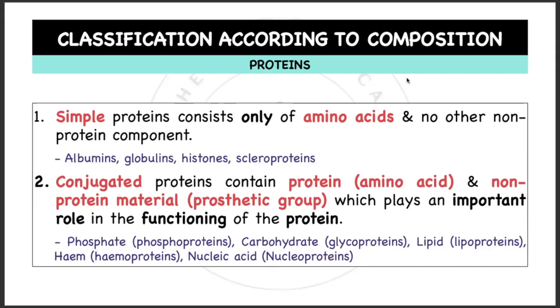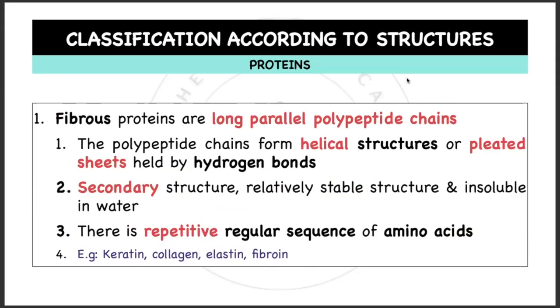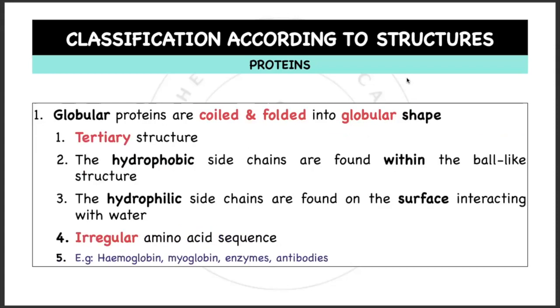Classification according to structures: fibrous proteins are long parallel polypeptide chains. The polypeptide chains form helical structures or pleated sheets held by hydrogen bonds—secondary structures. They are relatively stable structure and insoluble in water. There is repetitive regular sequence of amino acids such as keratin, collagen, elastin, and fibroin.